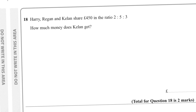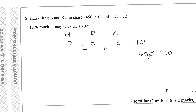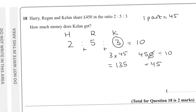Question eighteen: Harry, Reagan, and Keelan share £450 in ratio 5:2:3. Total parts = 5 + 2 + 3 = 10. One part = 450 ÷ 10 = 45. Keelan has 3 parts, so 3 × 45 = £135.